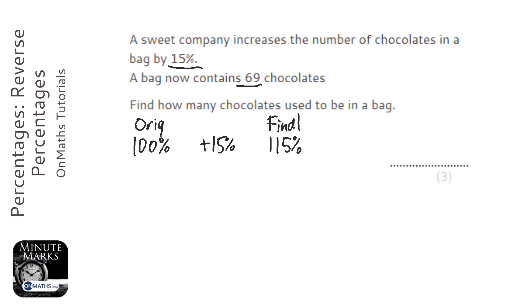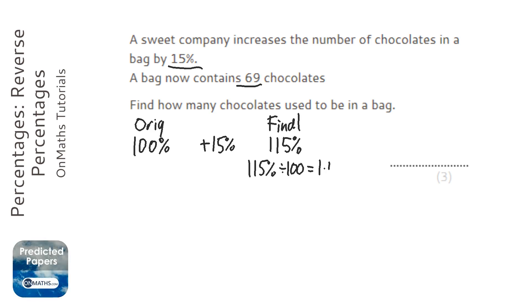We want to convert that to a multiplier, so 115% divided by 100 is going to be 1.15 — that's our multiplier.